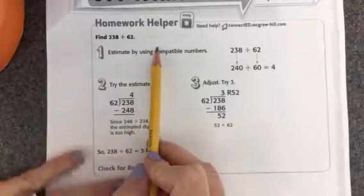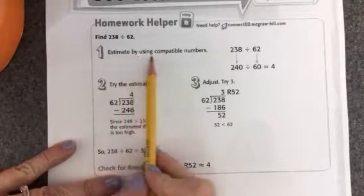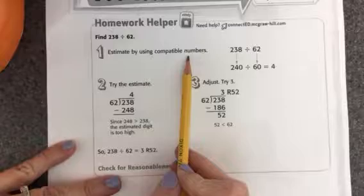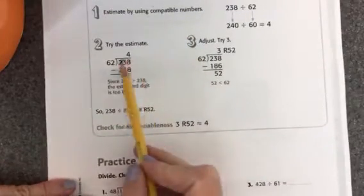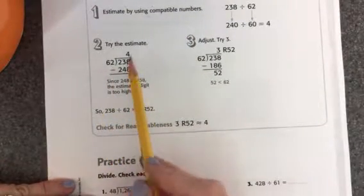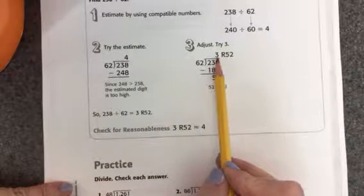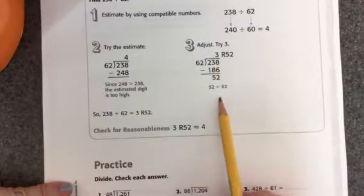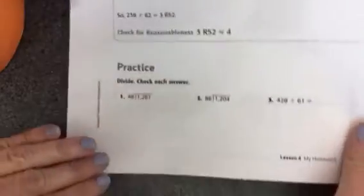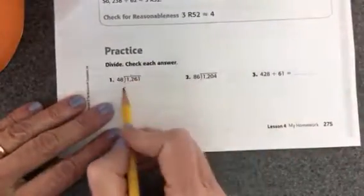Here's our homework helper. Today what we're going to do is estimate by using compatible numbers, and then we'll try working out a problem. If it works, great. If it doesn't work, we'll adjust the quotient and try again. So let's take a look at this one. Let's do the first one together.